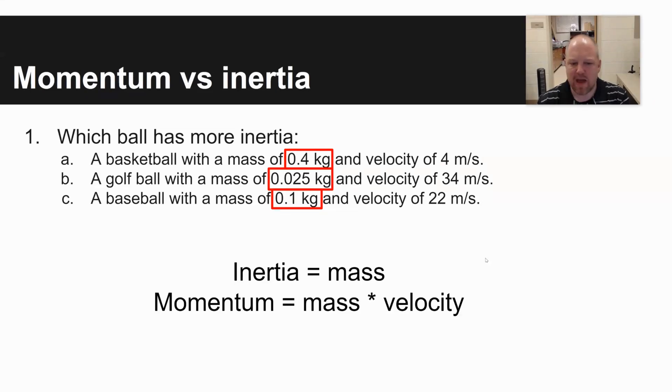Inertia is just mass. Momentum is mass times velocity. And so the answer would be A because the basketball has the most mass. Velocity has nothing to do with inertia. It has everything to do with momentum. And so a train sitting still has a ton of inertia but no momentum. A bullet has very little inertia but a lot of momentum if it's traveling very quickly.